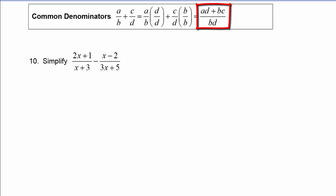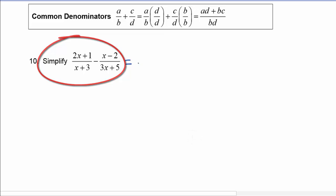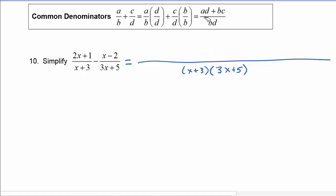One of the things we can do is just use this result in order to add fractions. Let's look at this example here. Our common denominator is going to be x plus 3 times 3x plus 5. We're just going to do this quick result here where we take ad plus bc in this form. So in our case, we would take 2x plus 1 and multiply it times the 3x plus 5. Then we have to subtract. We're going to take the x minus 2 and multiply it times x plus 3.